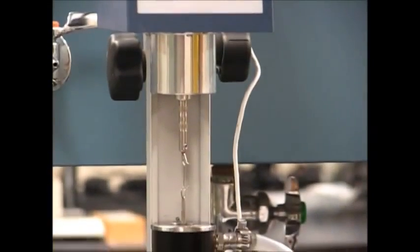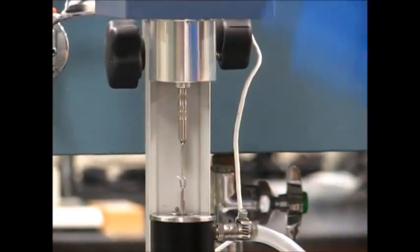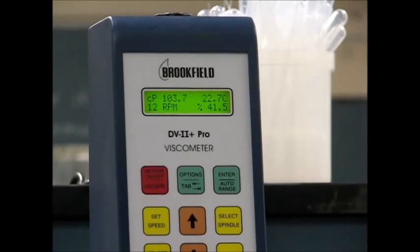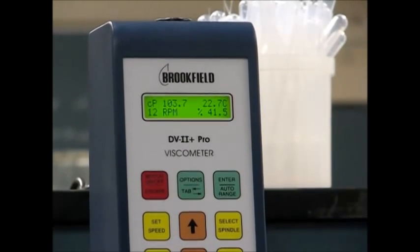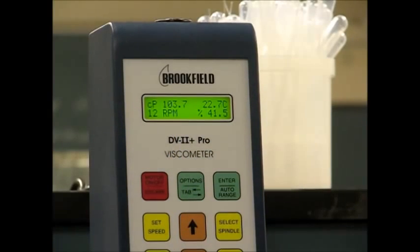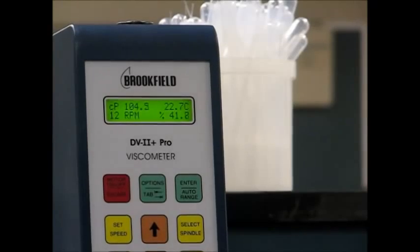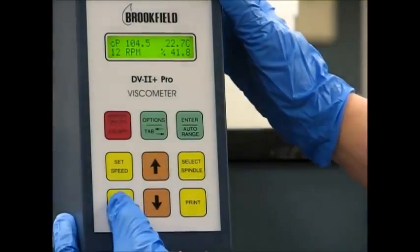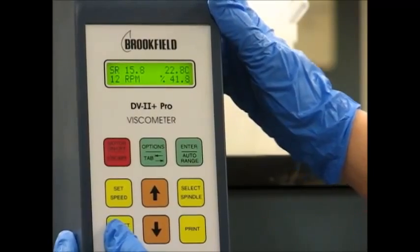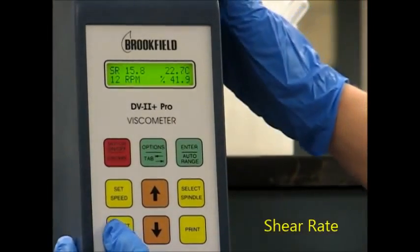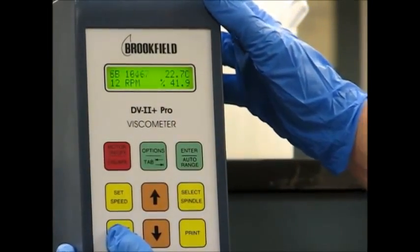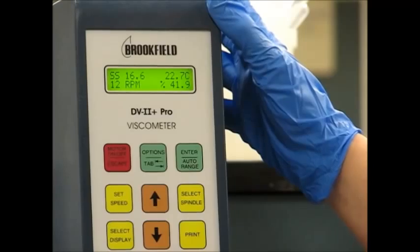Our percent torque says that it's at 41%, which is between our range of 10% and 100%. And it's also telling us that at this rpm, the viscosity of our fluid is around 104 centipoise. We can also use the select display key to display the shear stress. And if you press it again, it also displays the shear rate. So at 12 rpms, our shear rate is 15.8, and our shear stress is 16.6.